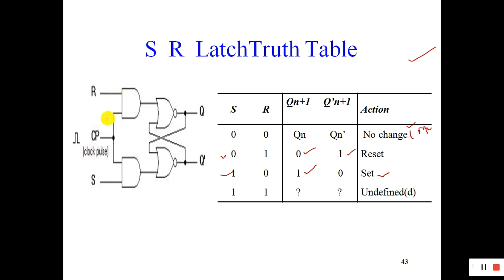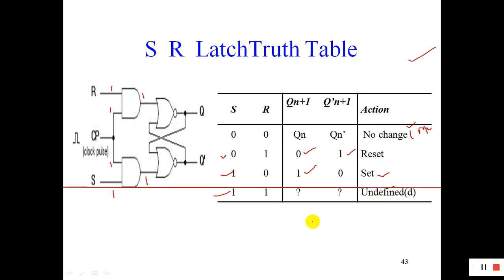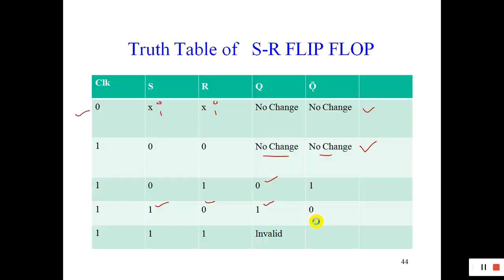Next condition: clock is high, S=1, and R=1. So clock×S = 1 and clock×R = 1. Looking at the SR latch truth table, when S=1 and R=1, the output is invalid. So when clock=1, S=1, R=1, the output will be invalid.